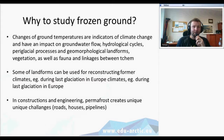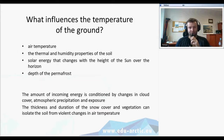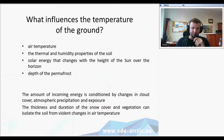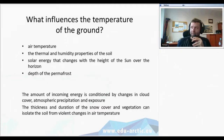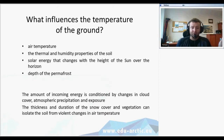In constructions and engineering, frozen ground is important for all structures. We have to ask ourselves what can influence the temperatures of the ground. Of course the most important is air temperature, the thermal and humidity properties of the soil, solar energy that changes with the height of the sun over the horizon, and also the depth of permafrost. The amount of incoming energy is conditioned by changes in cloud cover — when there is direct solar radiation it warms the ground — but changes in cloud cover, atmospheric precipitation, and different exposure also influence ground temperatures.